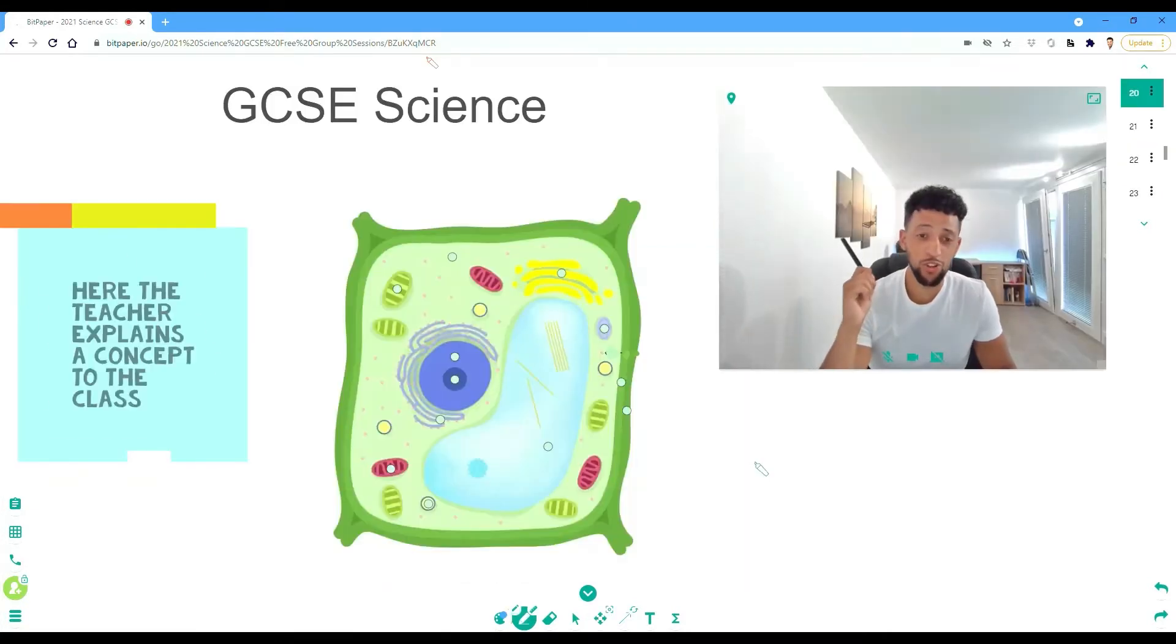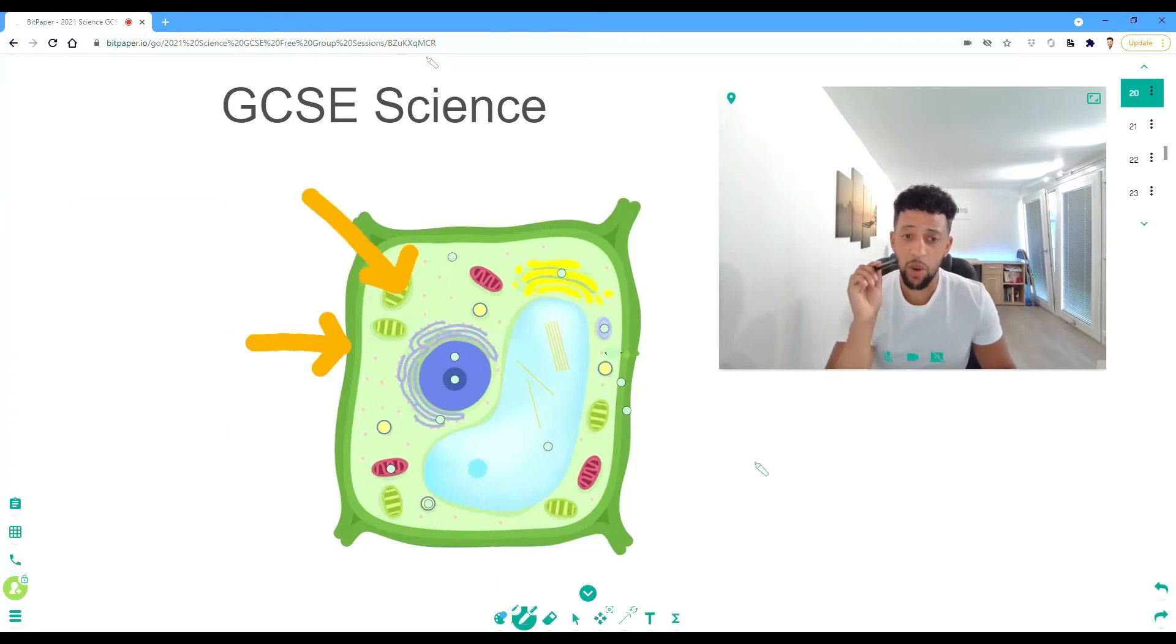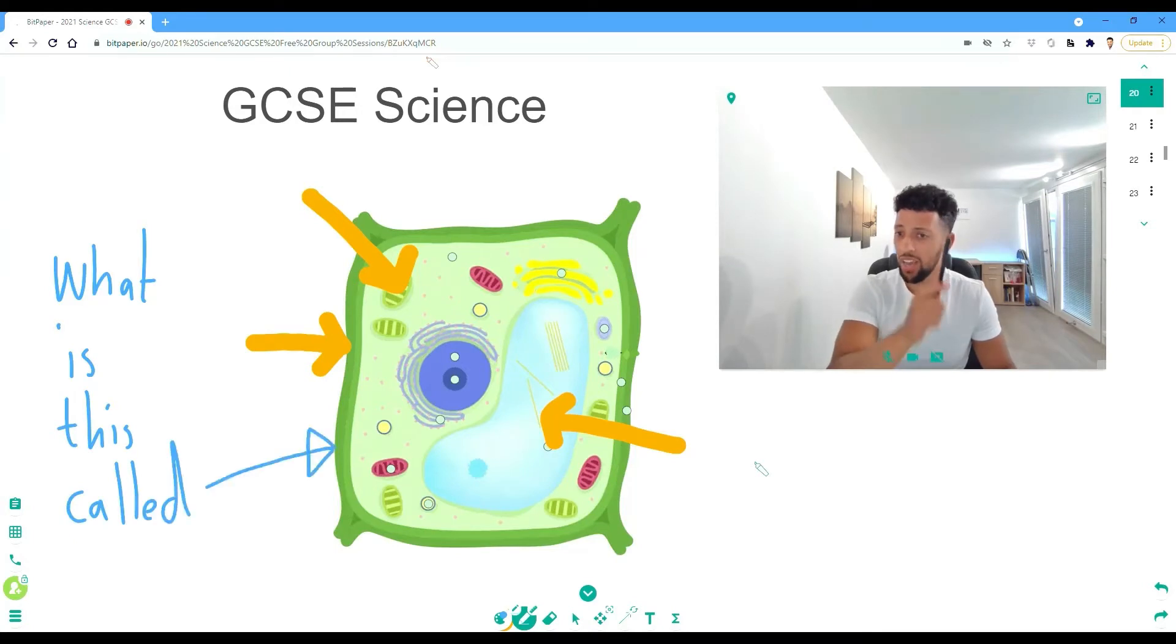Alright, now we're on to the plant cell and its structure. The first thing you can see here is the cell wall. Then we have the chloroplast, and then the vacuole. Everyone get ready. My question for you is this: What is this part here called?